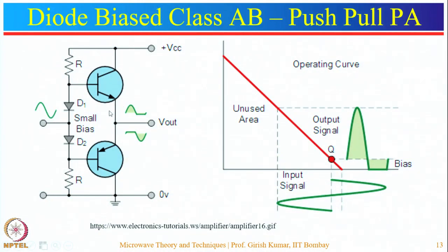The next configuration is diode-biased class AB. Here diodes with properties similar to the emitter-base junctions of the NPN and PNP transistors are used for biasing. When temperature changes, similar variations occur in both the diodes and the emitter-base junctions of the transistors, so the operating point does not shift. They provide a complete waveform without distortion. Eliminating crossover distortion is one of the biggest advantages of class AB amplifiers.